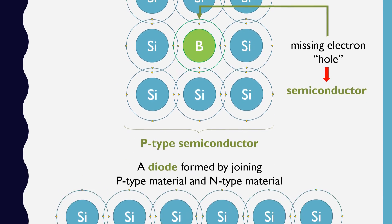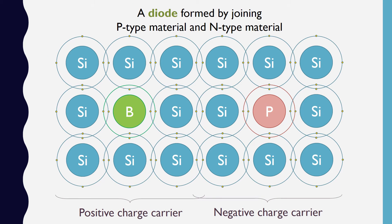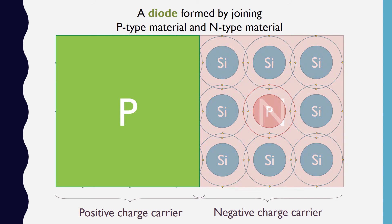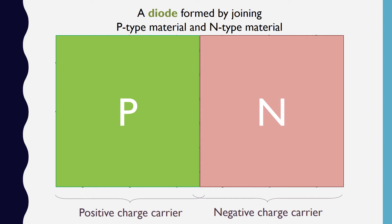If we place p-type material and n-type material back to back, we create a diode. In this diagram, the left half of the diode is p-type material, and the right half of the diode is n-type material. From this point forward, we'll abstract away the chemical details of the materials by using this green box to represent boron-doped silicon, and this red box to represent phosphorus-doped silicon.